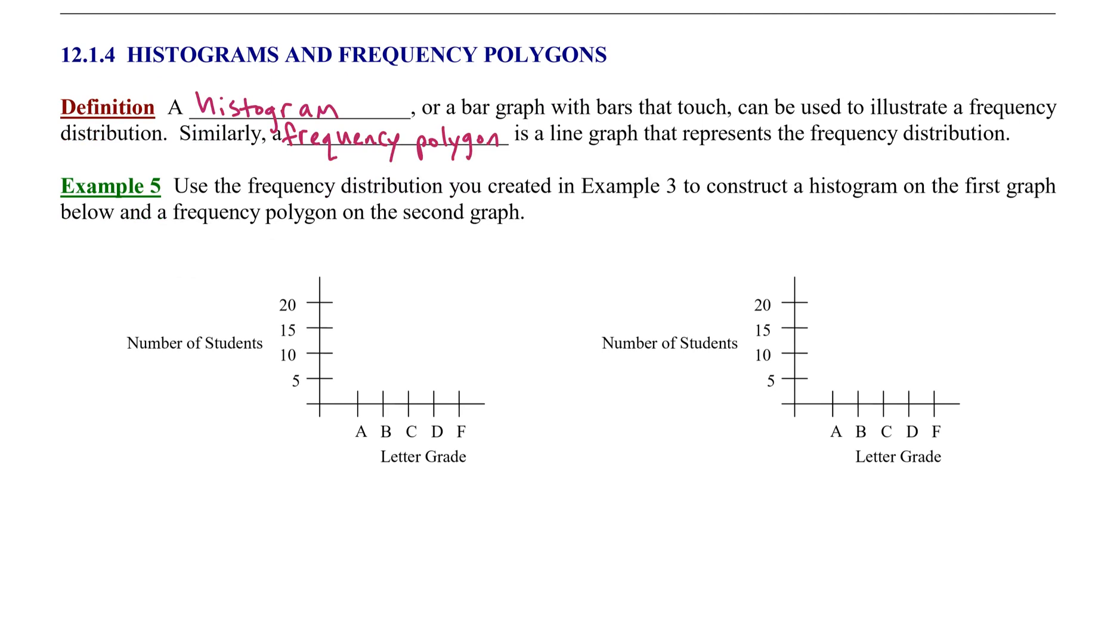Now from the data, there were three A's. So what we're going to do is draw a bar that spans letter A and reaches up to a height of 3. I'm going to approximate the height there and make it about 3.